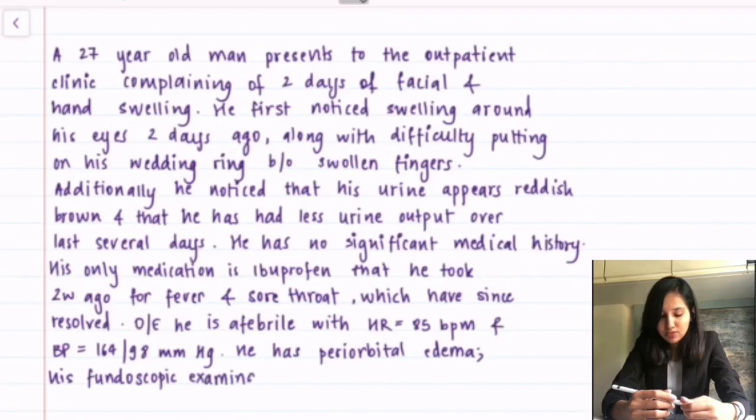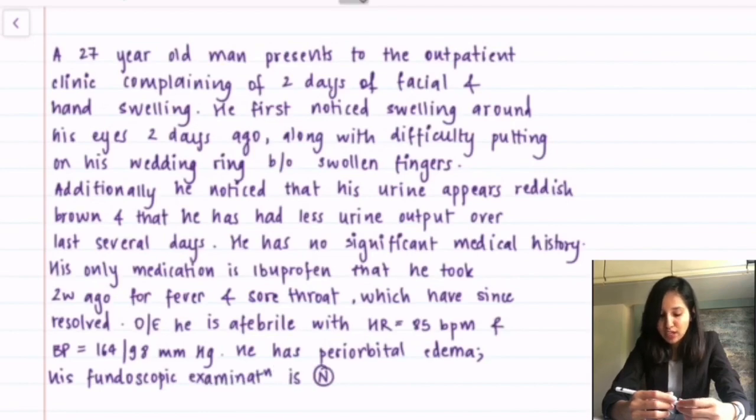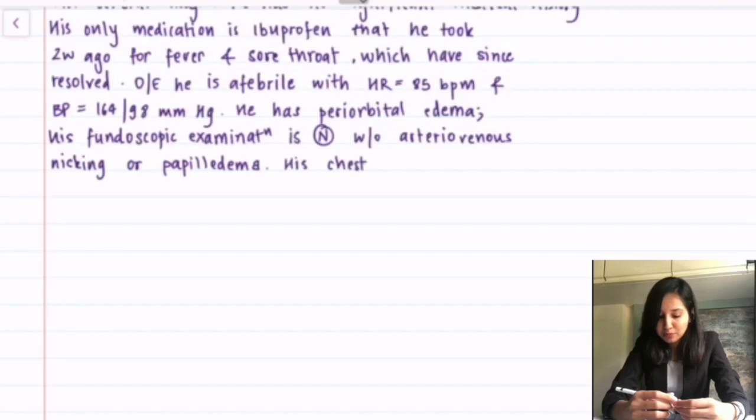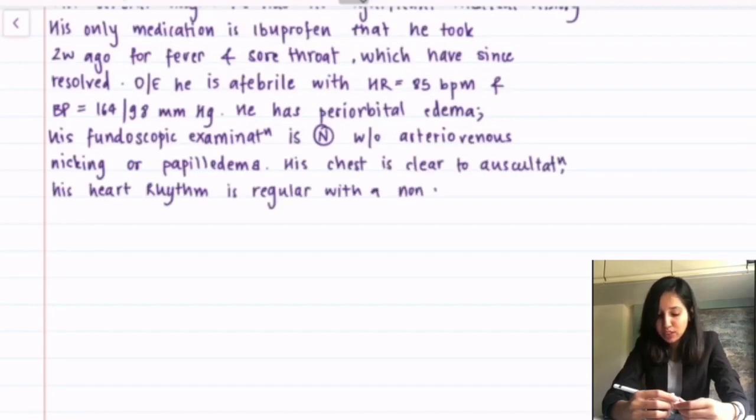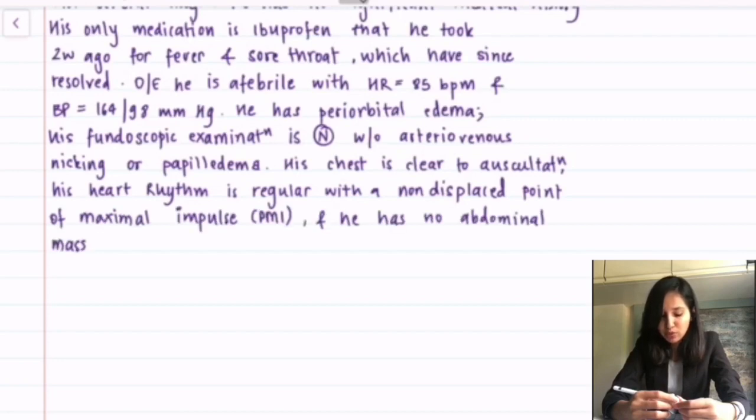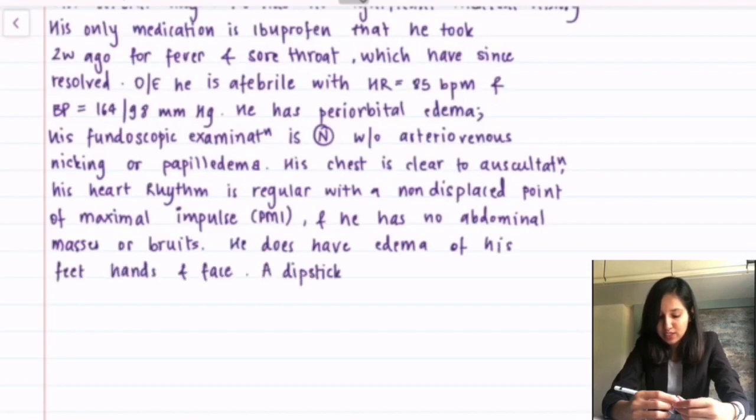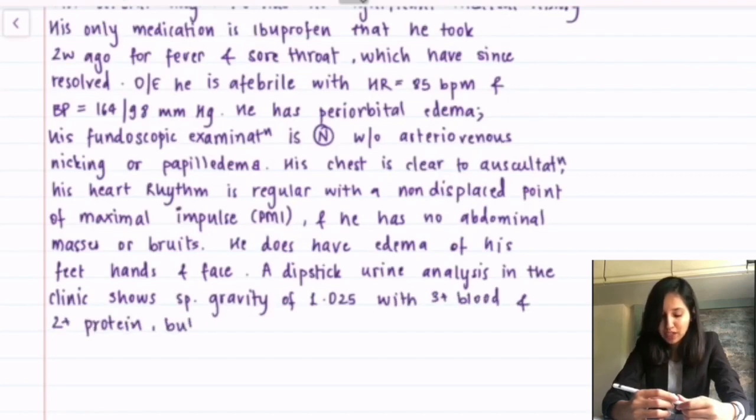He has periorbital edema. His fundoscopic examination is normal, without arteriovenous nicking or papilledema. His chest is clear to auscultation. His heart rhythm is regular with a non-displaced point of maximum impulse and he has no abdominal masses or bruits. He does have edema of his feet, hands and face. Dipstick urine analysis in the clinic shows specific gravity of 1.025 with 3 plus blood and 2 plus protein, but it is otherwise negative.